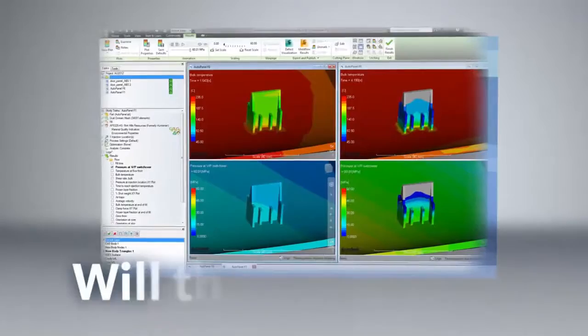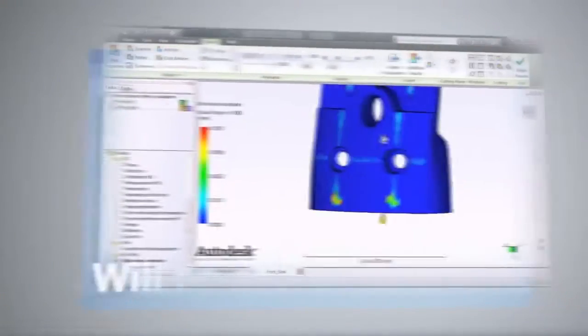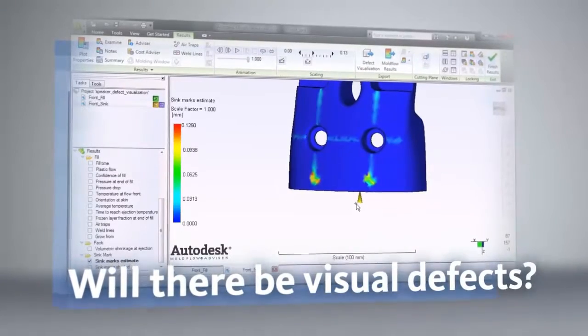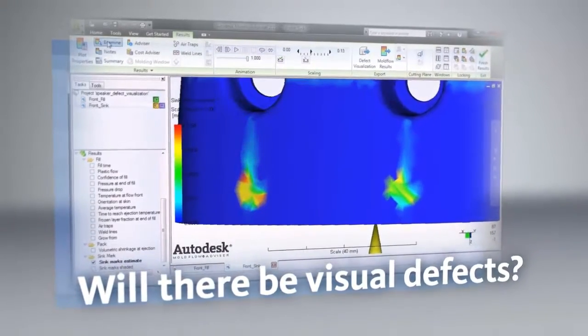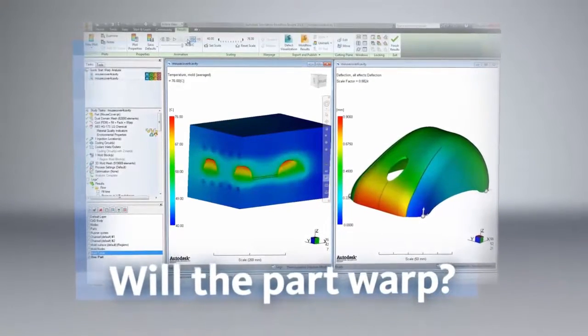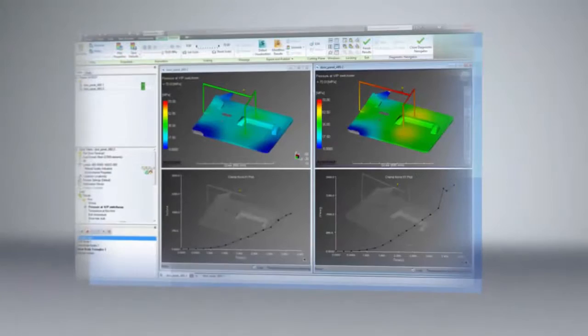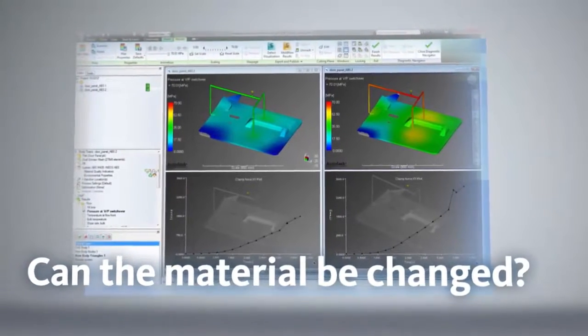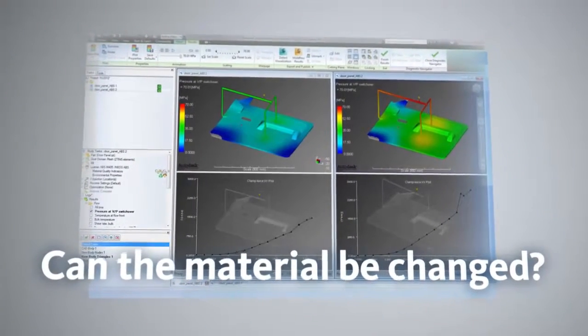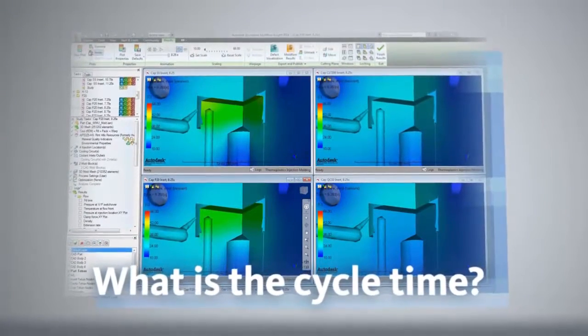Questions like... Will the mold fill? Will there be visual defects such as sink marks or weld lines? Will the part warp? Can the part still be molded successfully if the material is changed? What is the required cycle time and can the cycle time be safely reduced?